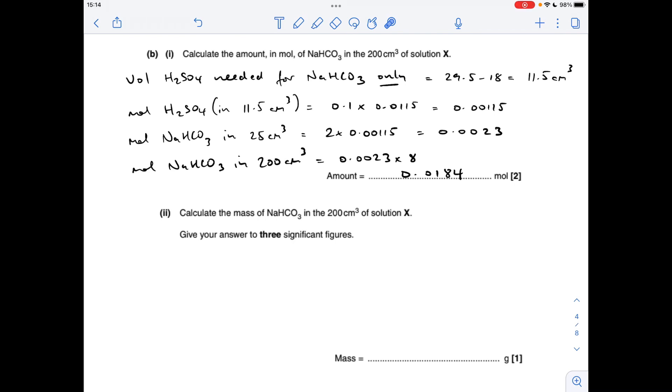So from that, we can work out how many moles of sulphuric acid are in that 11.5 cm cubed portion—concentration times volume. The moles of sodium hydrogen carbonate in the 25 cm cubed sample is going to be double that from the ratio in the equation. And then the moles of sodium hydrogen carbonate in the 200 cm cubed solution is going to be 8 times the moles in 25, because 200 is 8 times bigger.